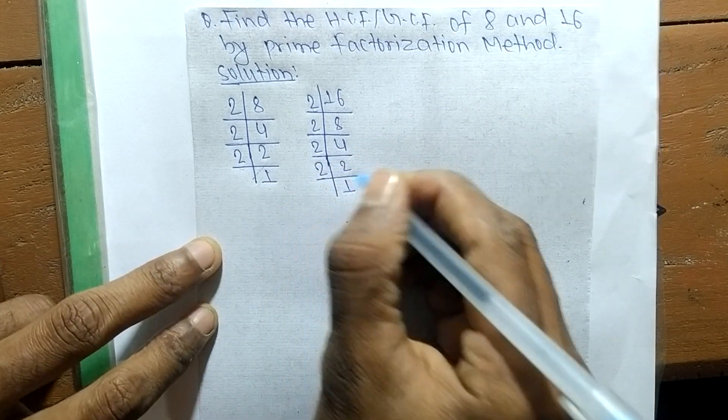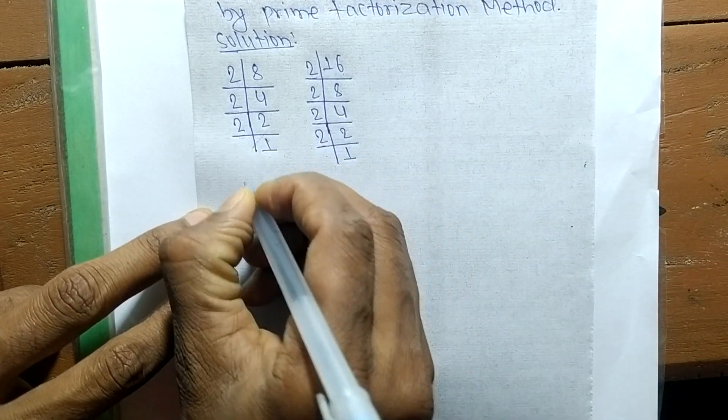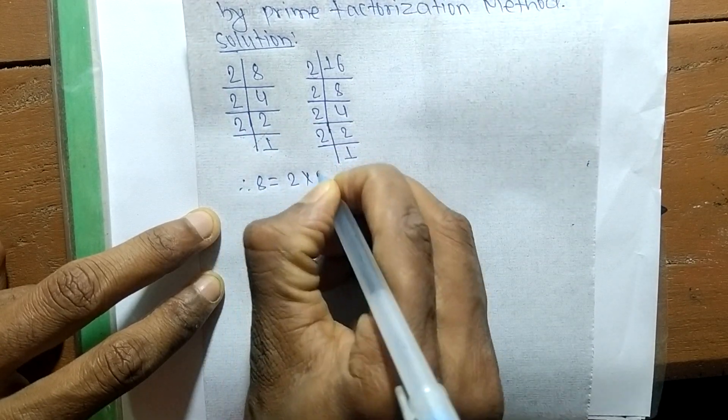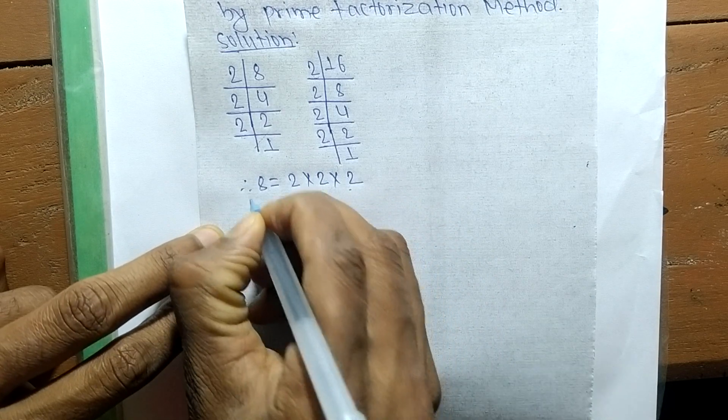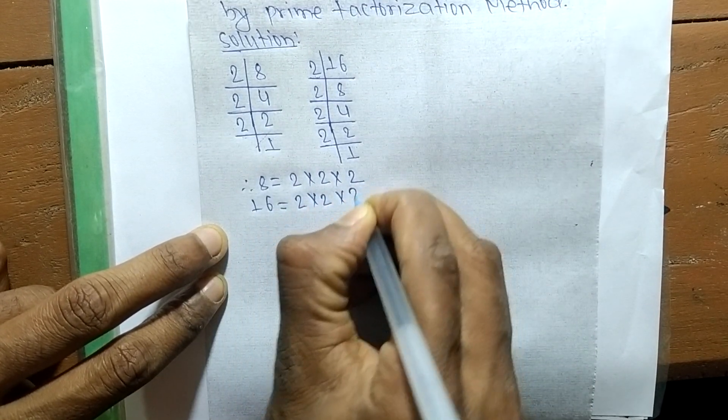After finding the prime factors from these prime factors, we can write 8 is equal to 2 times 2 times 2, and 16 is equal to 2 times 2 times 2 times 2.